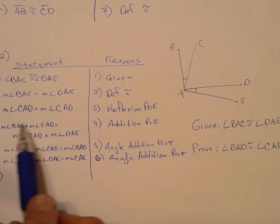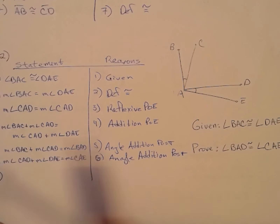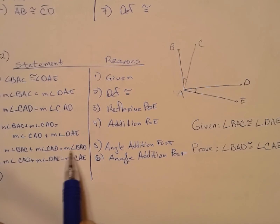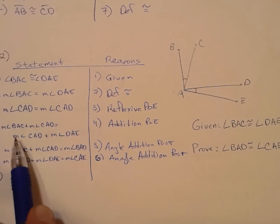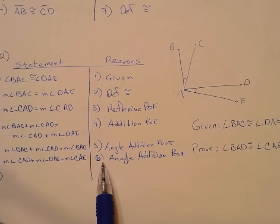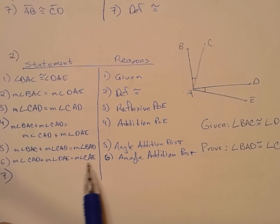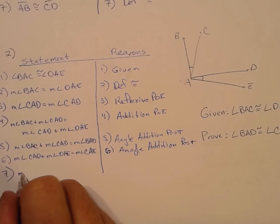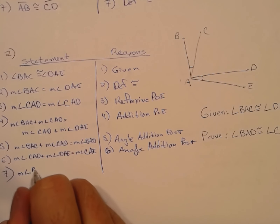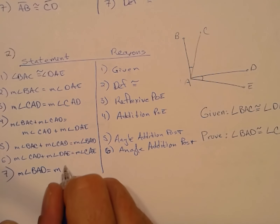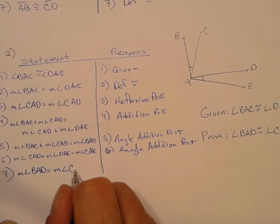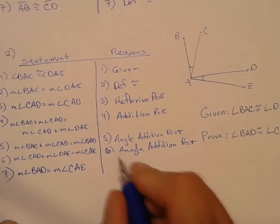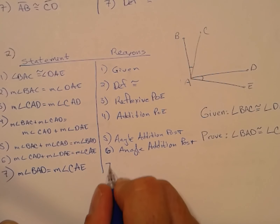We're going to take statement number 4 and substitute measure of angle BAD in for the left-hand side and substitute measure of angle CAE in for the right-hand side. So we get: measure of angle BAD equals the measure of angle CAE. That is substitution.